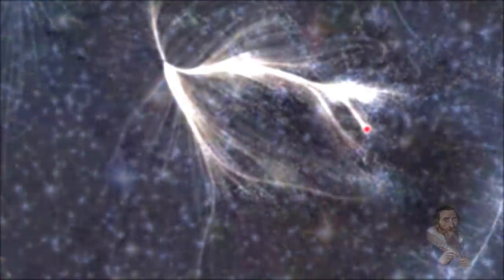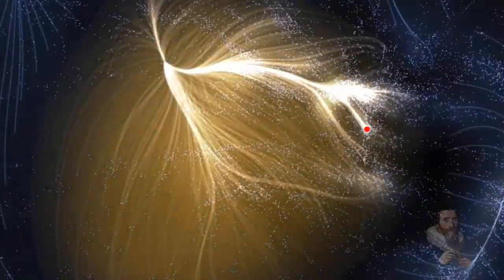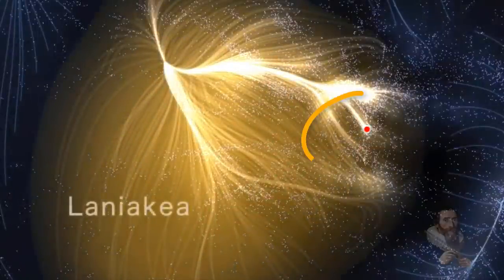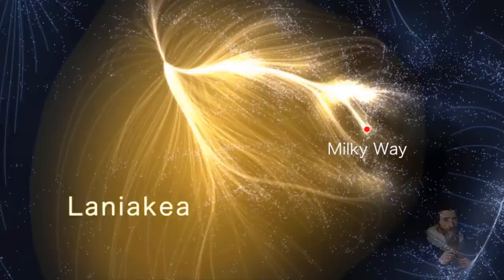The Great Attractor is thought to be the gravitational center of the Laniakea supercluster, of which the Milky Way is but one of a hundred thousand other galaxies. One theory is that it's a confluence of dark energy.